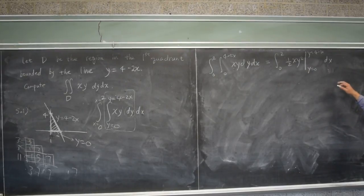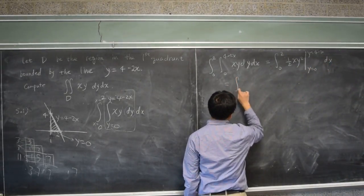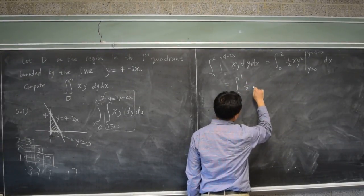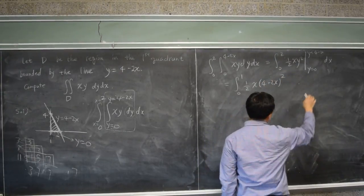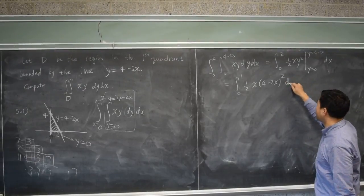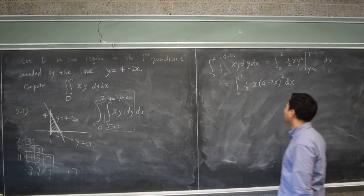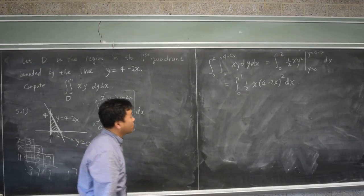So back to our calculation. Now these should be plugged in here, which is 0 to 2, one half x times 4 minus 2x squared. And when you plug in 0, that's nothing. So now we have this integral. Wait, why is it 1 to 0? 0 to 2. Oh, 0 to 2, thank you.